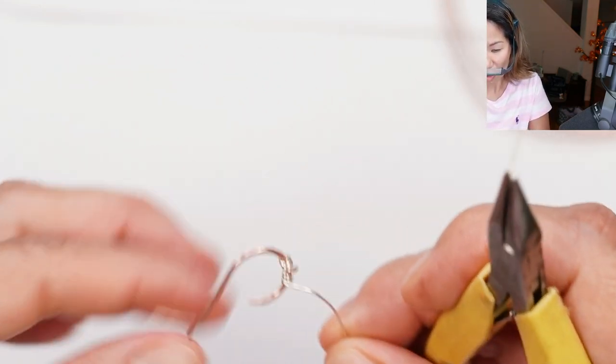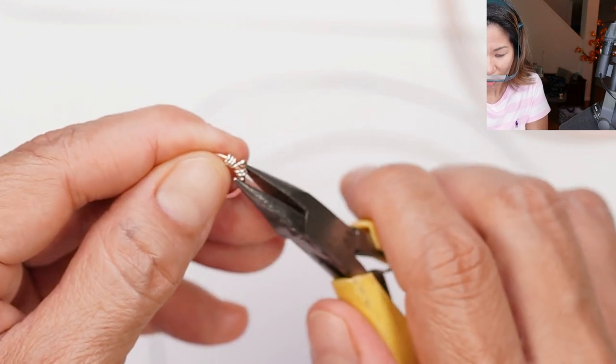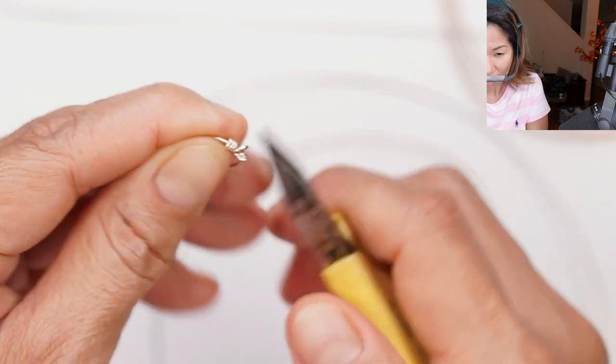Another handy tip is when you cut your wires to end it, cut it so they're on the back side of your earring so that that cut end won't be seen.